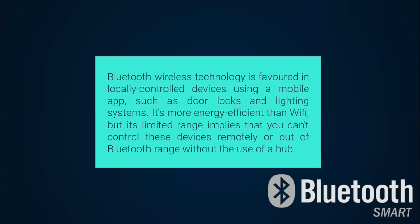Bluetooth wireless technology is also favored in locally controlled devices using a mobile application, such as door locks and lighting systems. It is more energy efficient in comparison to Wi-Fi, but its limited range implies that you cannot control these devices remotely or out of Bluetooth range without the use of a hub.